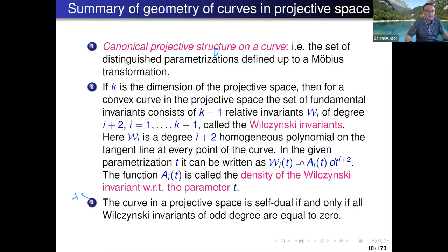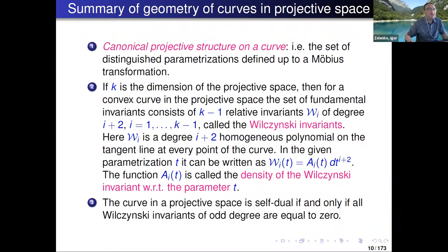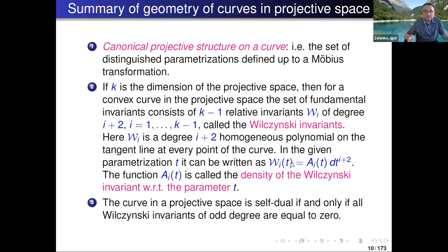The curves are not arbitrary but are self-dual. The simplest definition: if you osculate up to the half-dimension, there is a symplectic form such that all these half-dimensional subspaces are Lagrangian. For these self-dual curves, only roughly half of the Wilczynski invariants are non-trivial — all odd-degree Wilczynski invariants are zero automatically, and only even-degree invariants appear.